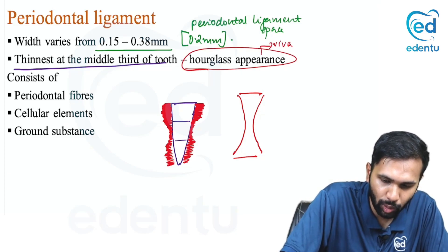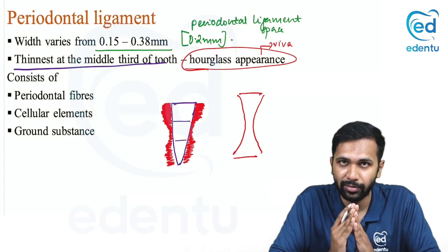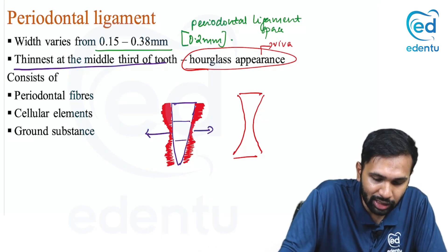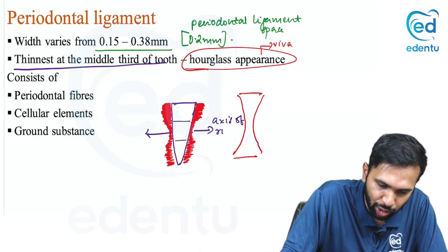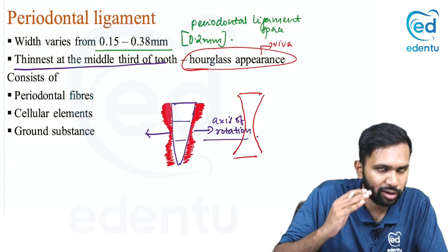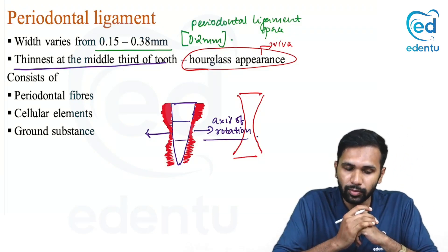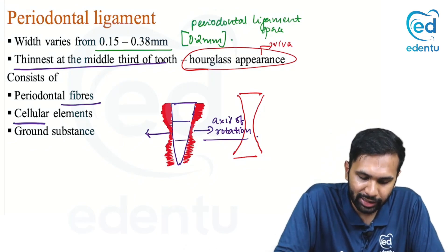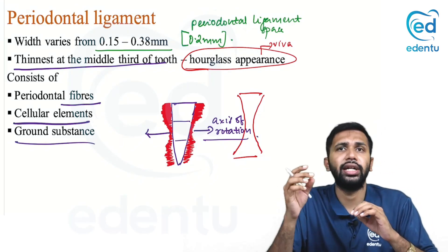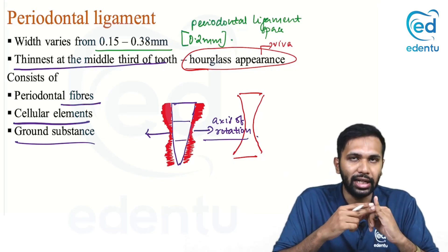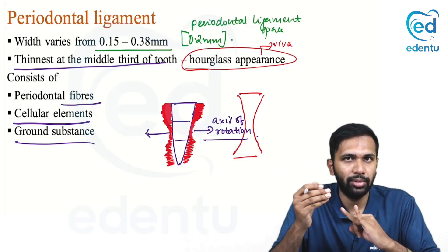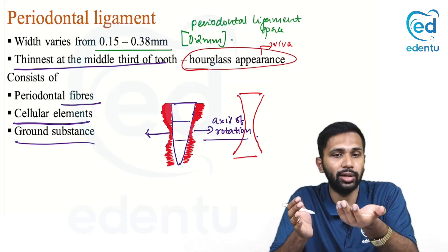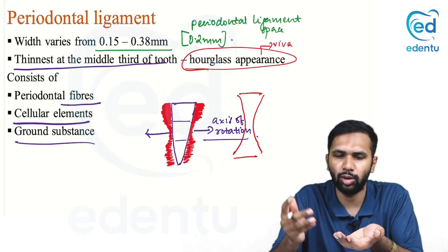The reason it is thin in the middle third is that this region forms the axis or fulcrum of rotation, facilitating the rotation of the tooth. The periodontal ligament mainly comprises fibers, cells, and ground substance. As the definition states it is highly cellular, so cells and fibers are embedded in a ground substance — imagine a gel-like matrix in which cells and fibers are present.